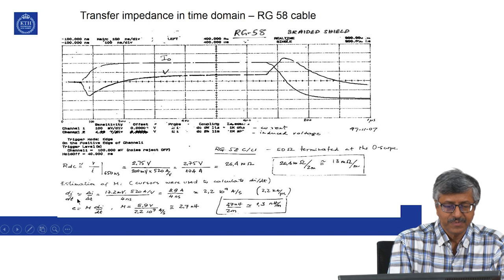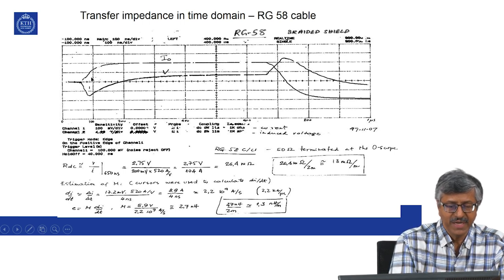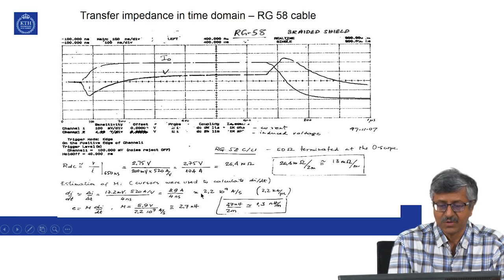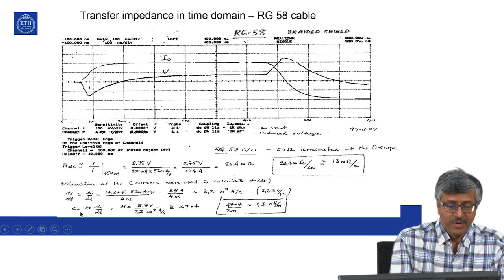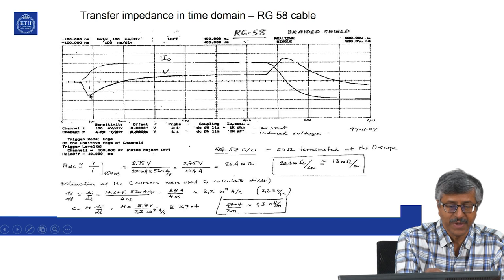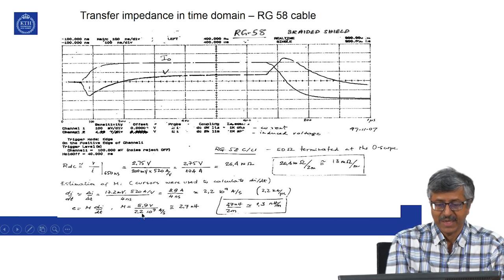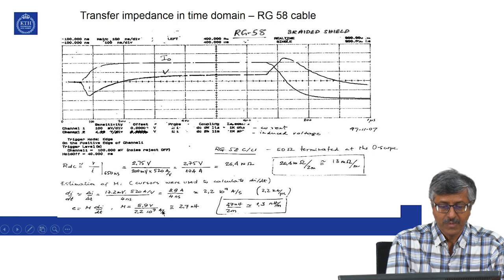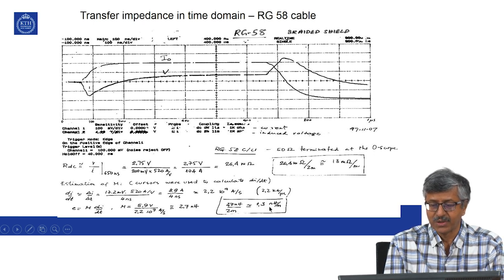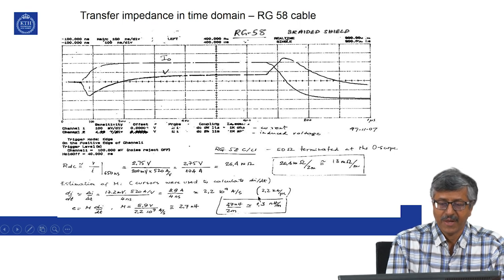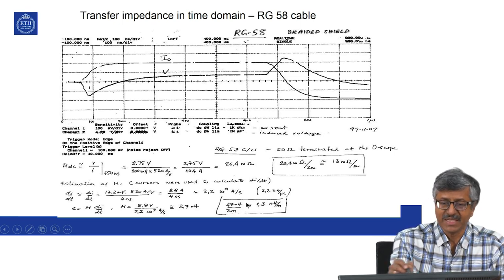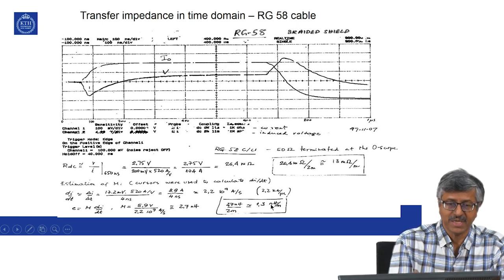For the peak dI/dt, it can be approximately calculated as 2.2 × 10⁹ amperes per second. Using V = M · dI/dt, the peak voltage of 5.9 volts divided by dI/dt gives a mutual inductance of 2.7 nanohenries, and per meter that is 1.3 nanohenries per meter. This is the leakage inductance. So from this experiment we have found both the DC resistance and leakage inductance of the cable. Transfer impedance is a combination of both.